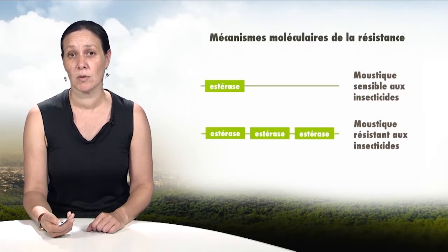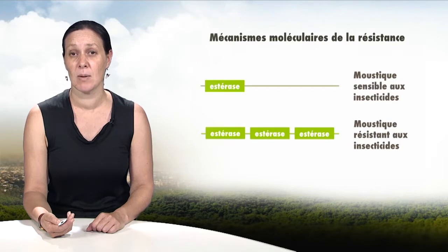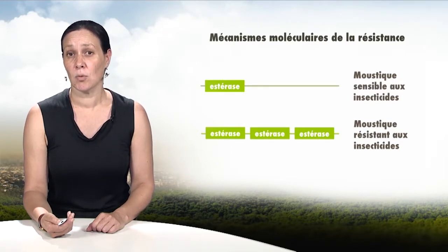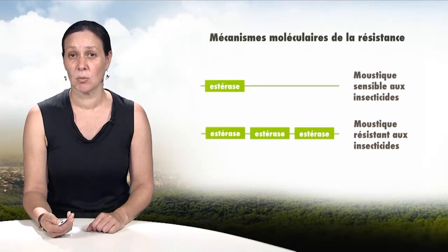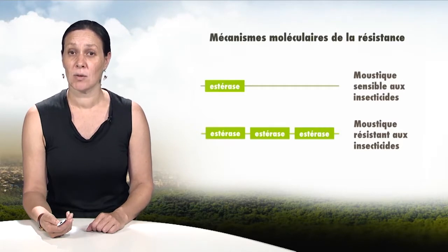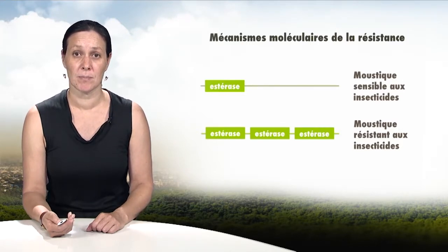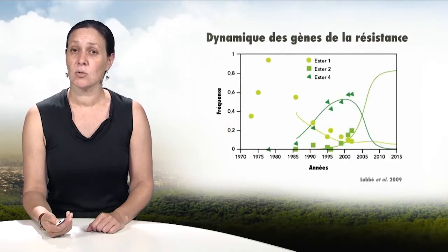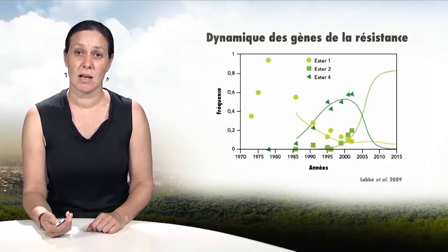One mechanism of resistance is the overproduction of detoxifying enzymes known as esterases. This overproduction can be linked to the multiplication and number of copies of the esterase gene in the mosquito's genome. Dozens of such examples are known in the world.